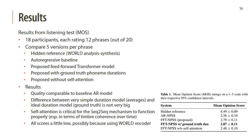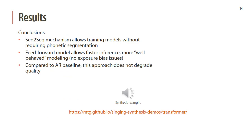All scores are somewhat on the low side, which we attribute to using a WORLD vocoder rather than a neural vocoder. Our final conclusions are that the proposed sequence-to-sequence model allows training a singing synthesizer without requiring phonetic segmentation. Using a feed-forward model instead of an autoregressive model allows for faster inference and more well-behaved modeling, avoiding exposure bias issues, without degrading final synthesis quality compared to the autoregressive baseline. Audio examples are available on our website. Thank you very much.